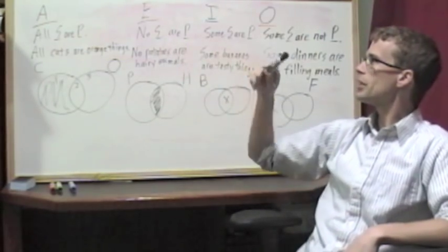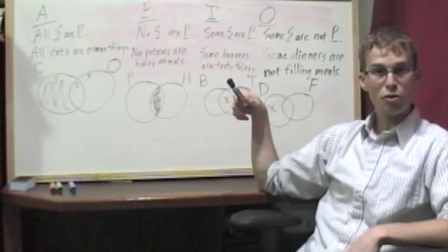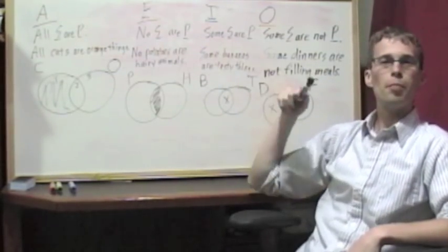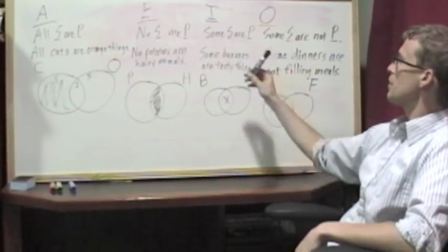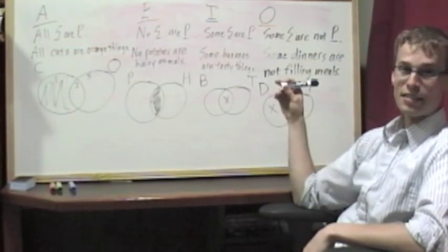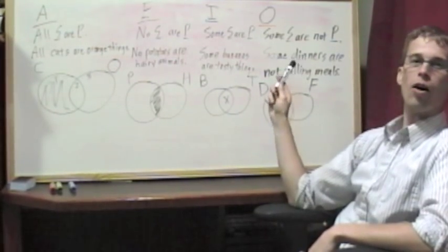For instance, if no potatoes are hairy animals for your E claim, then it's also true that no hairy animals are potatoes. For your I claim, if some bananas are tasty things, then you also know it's true that some tasty things are bananas.